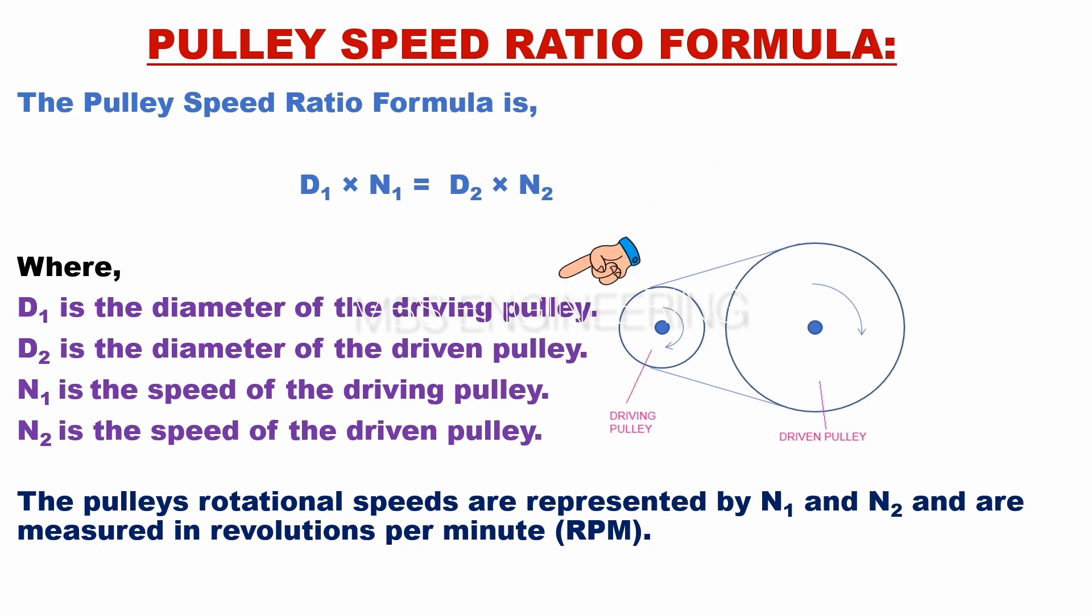Where D1 is the diameter of the driving pulley, D2 is the diameter of the driven pulley, N1 is the speed of the driving pulley, N2 is the speed of the driven pulley. The pulley's rotational speeds, N1 and N2, are measured in revolutions per minute, RPM.